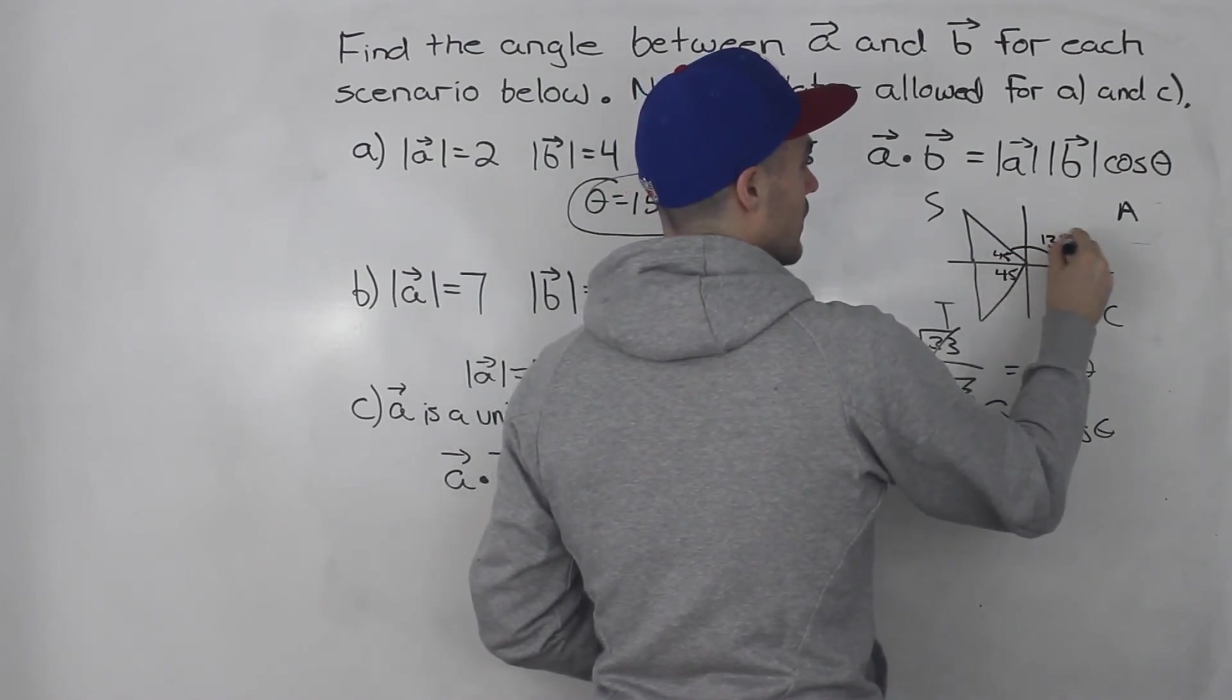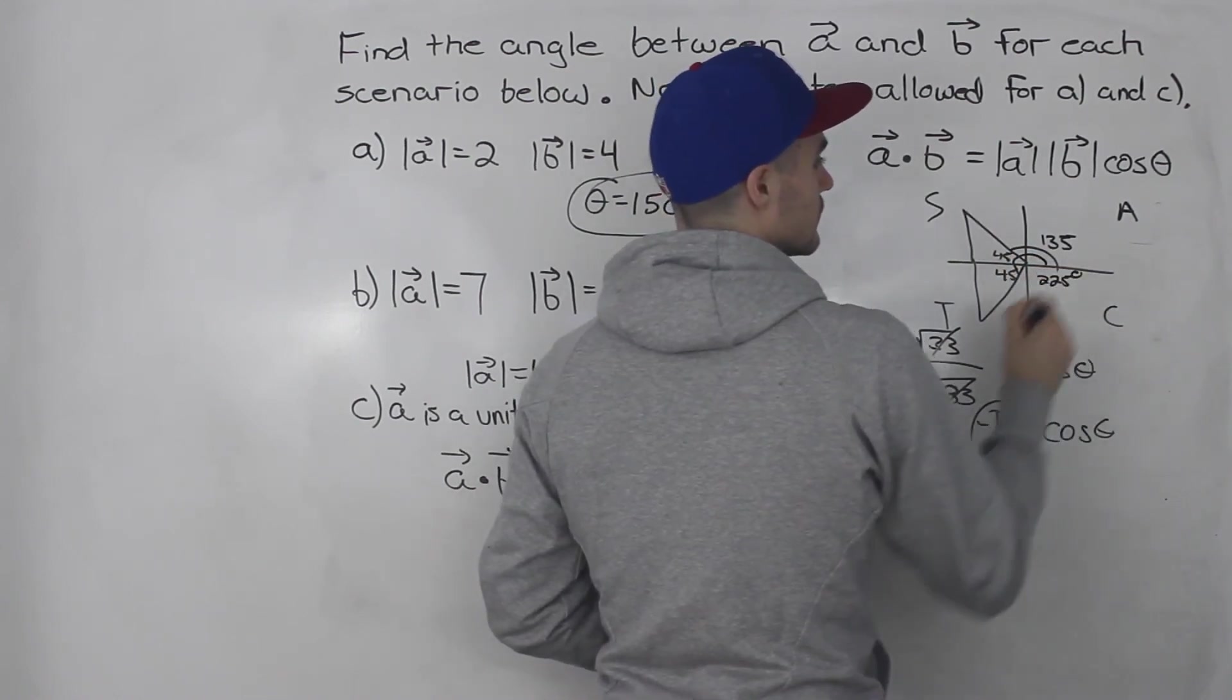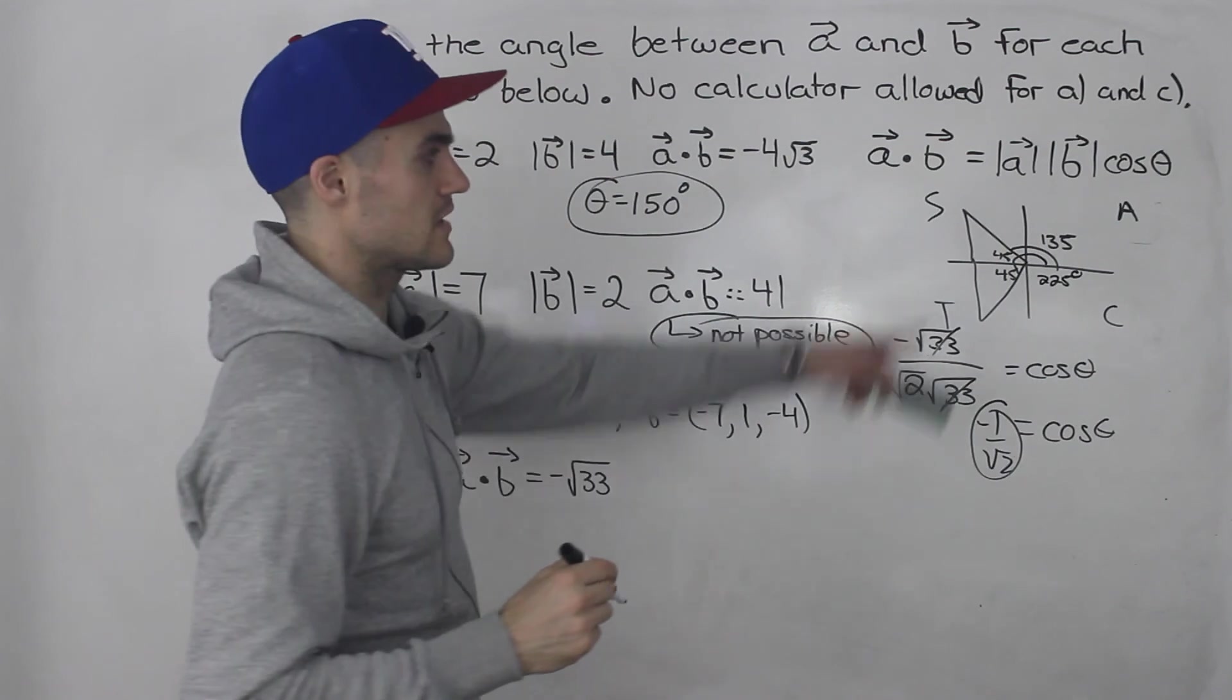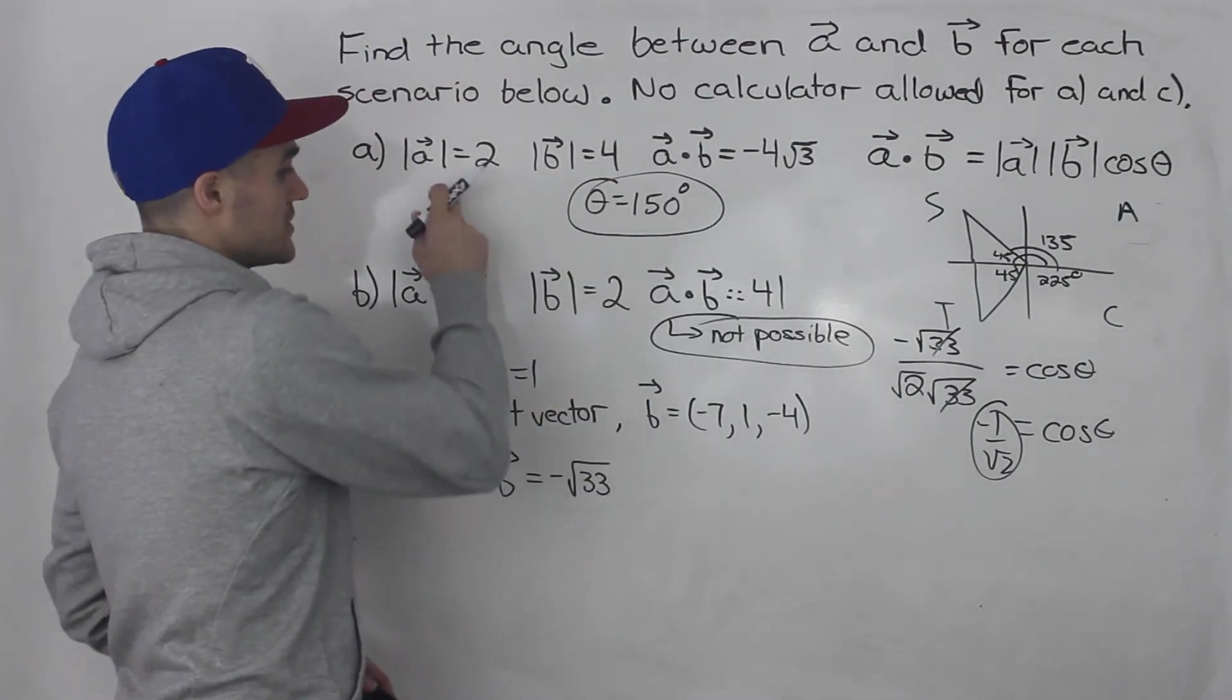So the main angle is going to be 135. So the main angle is going to be either 135 or it's going to be 225 degrees. So either answer works for this, and usually you take a smaller angle like we did in part a.